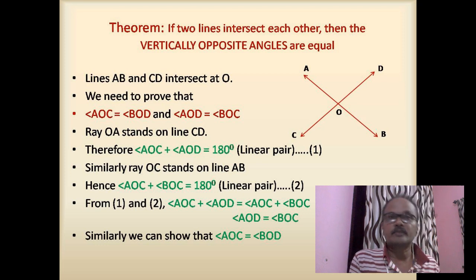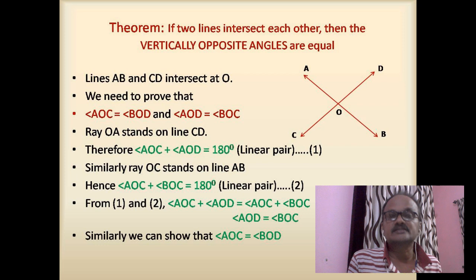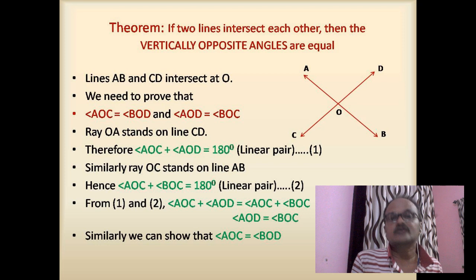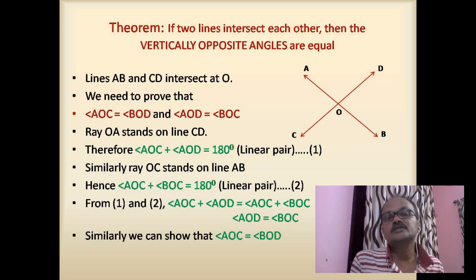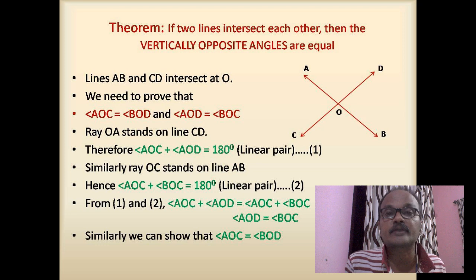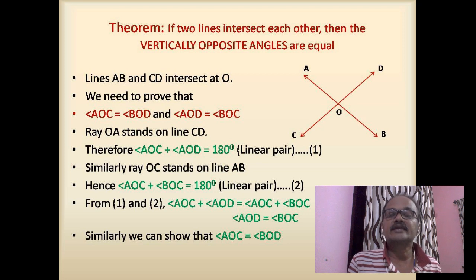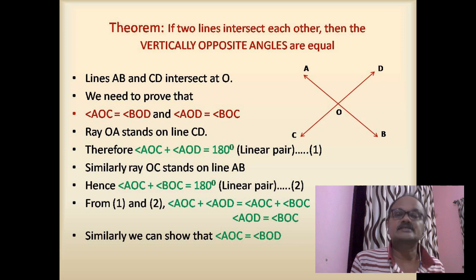We use the linear pair property — adjacent supplementary angles where the non-common arms are opposite rays are called a linear pair of angles. Ray OA stands on line CD, therefore angle AOC plus angle AOD equals 180 degrees — they form a linear pair. That is equation one. Similarly, ray OC stands on line AB, so angle AOC plus angle BOC equals 180 degrees. That is equation two.